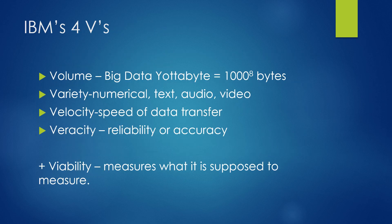IBM coined the Four Vs of big data. Volume refers to big data — in the future, we may have computers holding yottabytes of data, which is 1000 to the eighth power in bytes. The variety of data is numerical, text, audio, and video. Velocity refers to the speed of data transfer, as we constantly seek faster speeds. Veracity is how reliable our data is. An additional V is viability — is it measuring what it's supposed to measure?